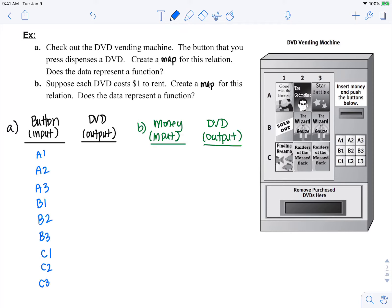Now what are your possible outputs? The DVDs. Gone with the breeze, the godmother, star battles.